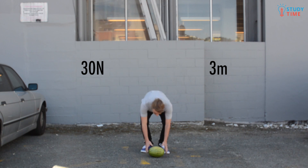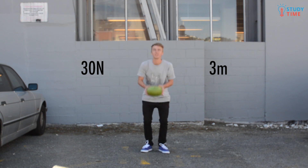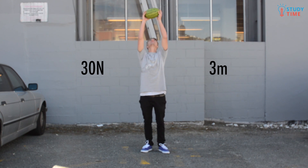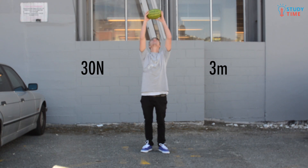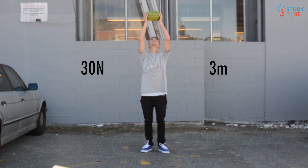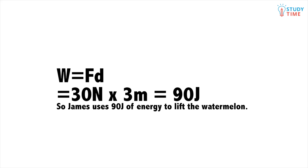If James uses a force of 30 newtons to lift a watermelon sitting on the ground 3 meters straight up into the air, how much work does he do on the watermelon? W equals FD, so 30 newtons times 3 meters equals 90 joules. So James uses 90 joules of energy to lift the watermelon.